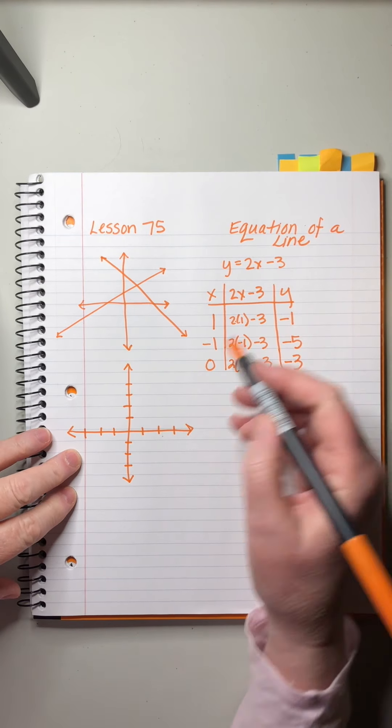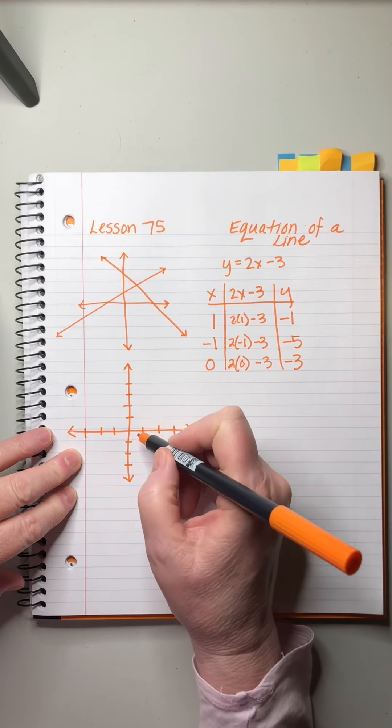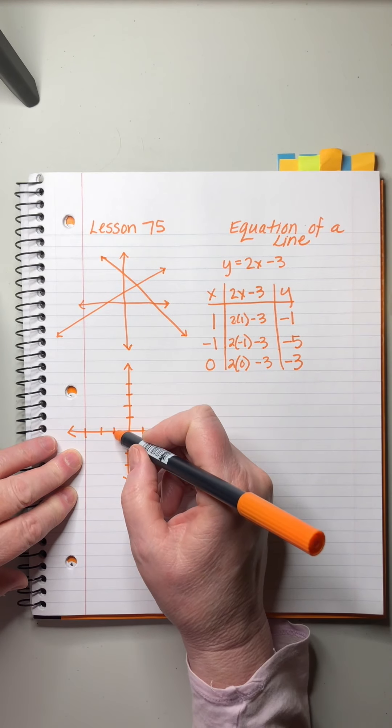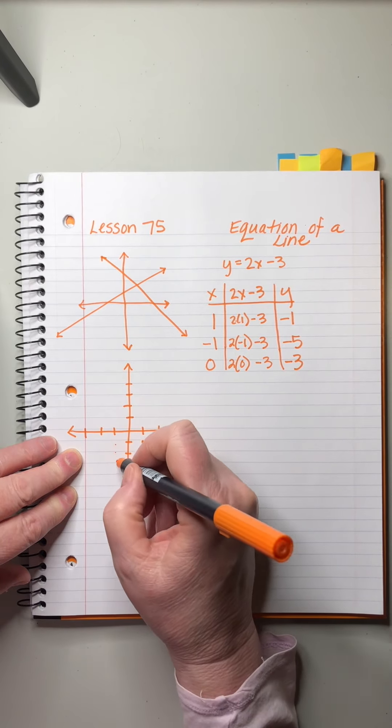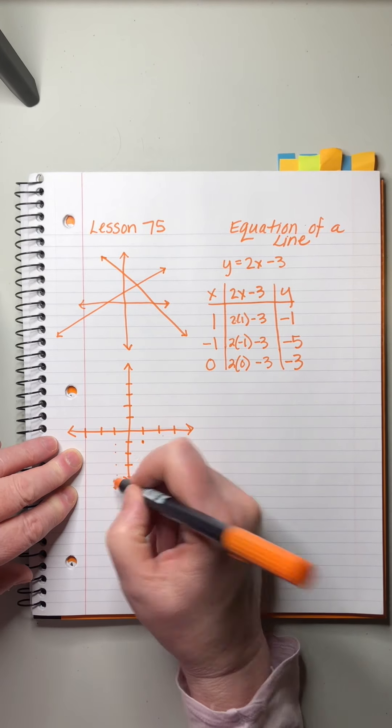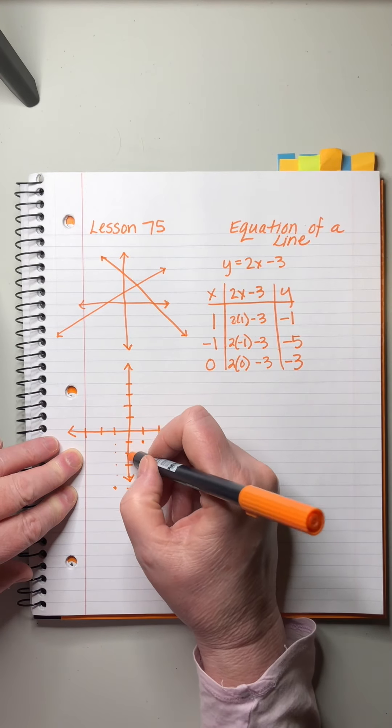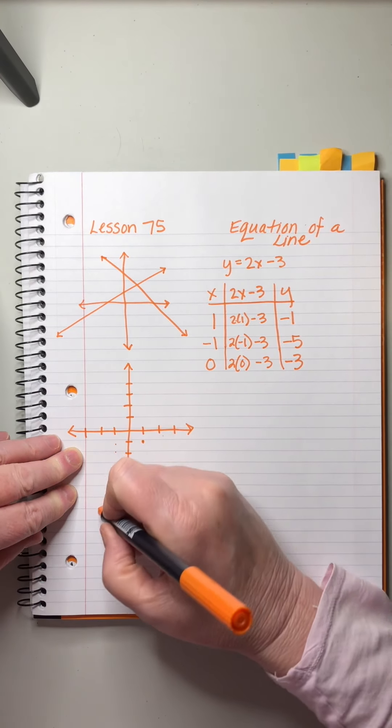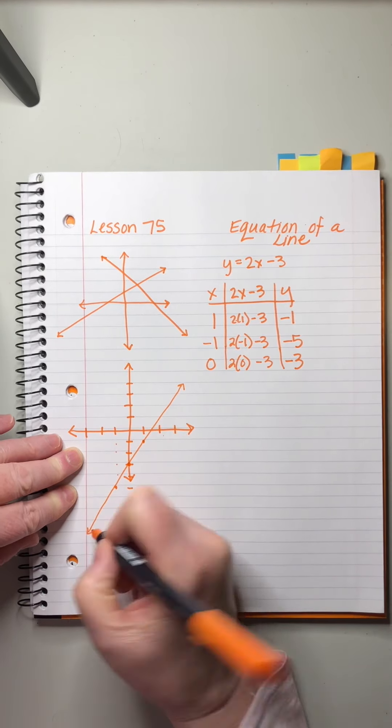So we graph these. 1 and negative 1. Negative 1 and negative 5. So that would be way down here, right? 1, 2, 3, 4, 5. And 0, negative 3. 1, 2, 3. Okay, so we would draw a line that connects them. And they look pretty straight, don't they?